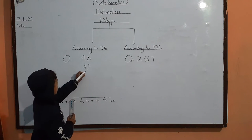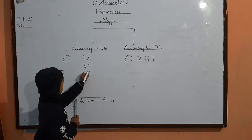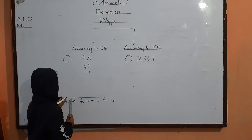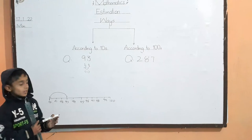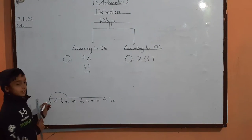Iska answer 19 hai. Ninety-three ki value ho, your rounding 90 hai.